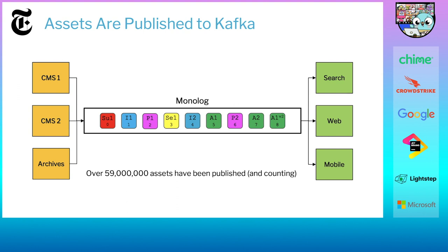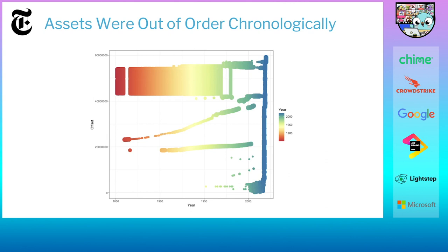Today we have over 59 million assets that have been published, and it increases every day. We only started using the monologue in 2017, so we started publishing things from 2017 and then went back and added things from the past in big chunks. This graph represents that — from offset zero, the very first thing we put on Kafka, all the way up to 60 million. From left to right is the year, with 1851 as our earliest article and 2020 as our most recent. There's a long continuous stretch of current publishing — the blue line on the right — and some intermittent bulk republishes, the red to green bits.